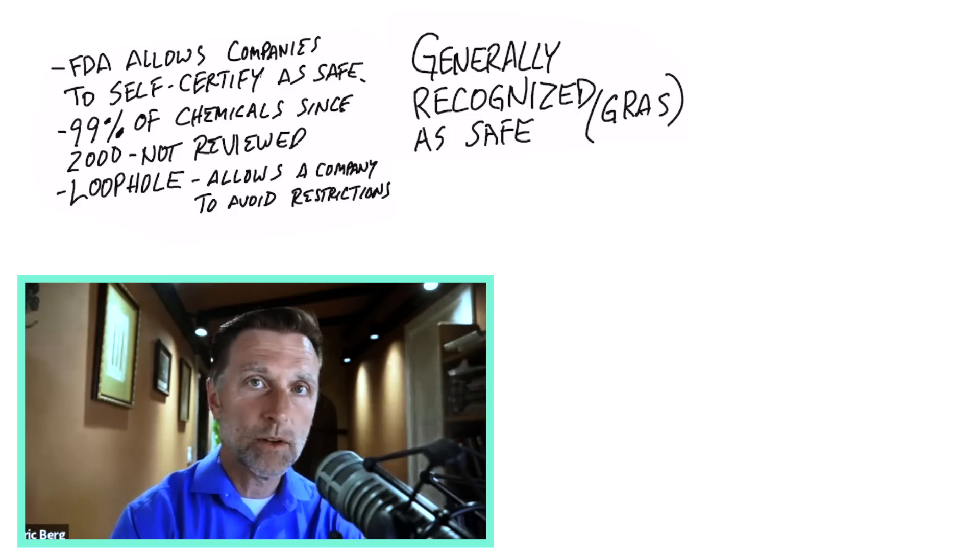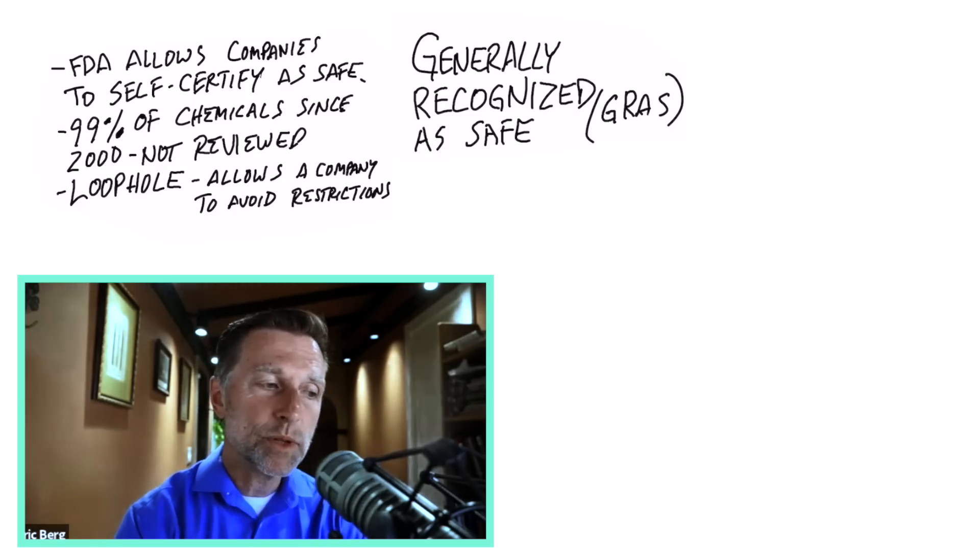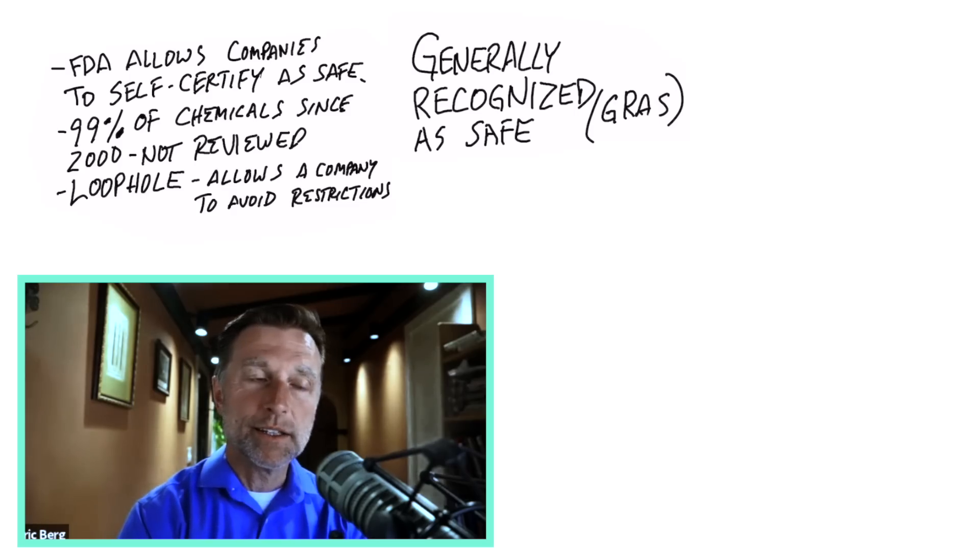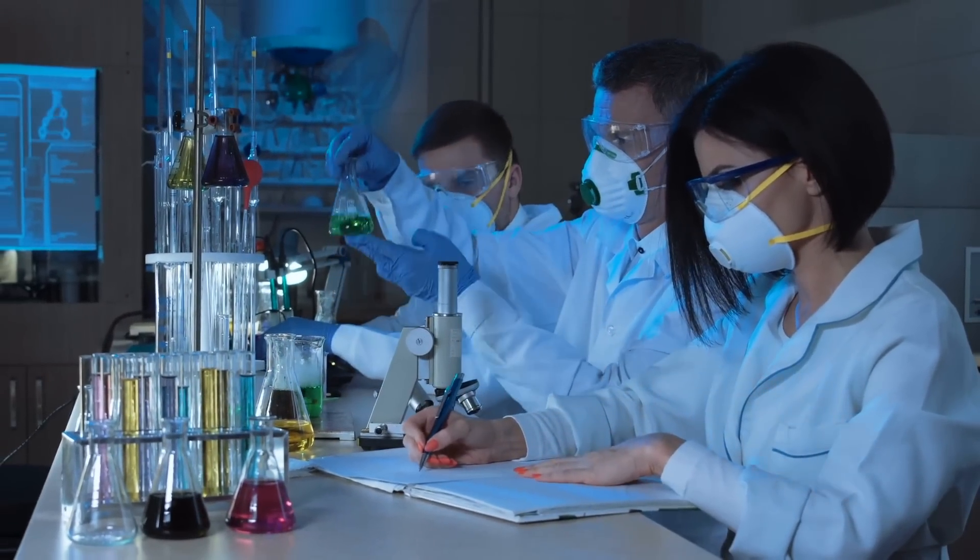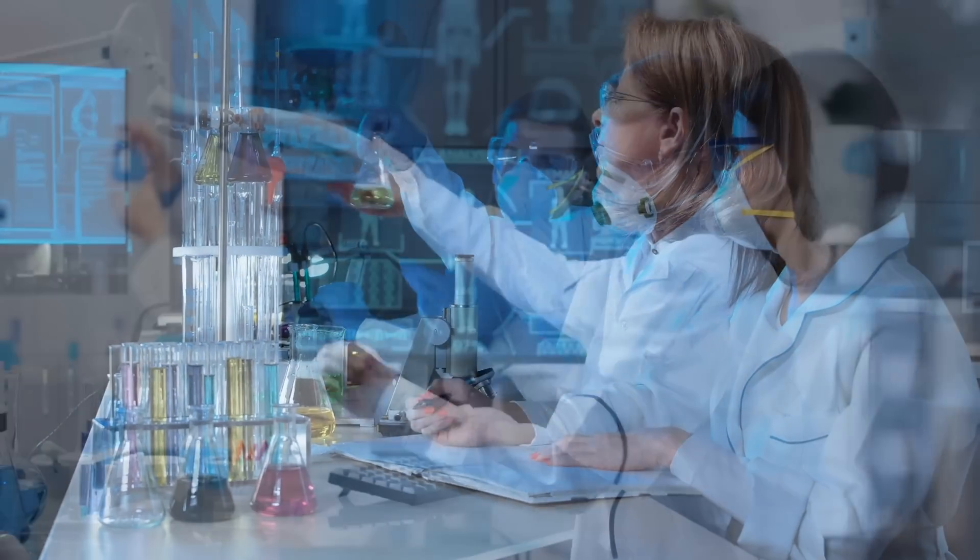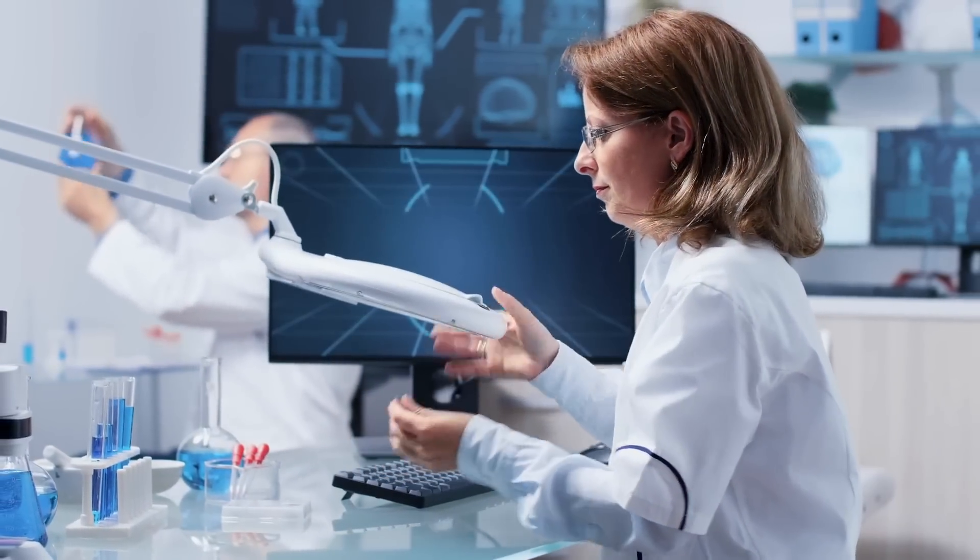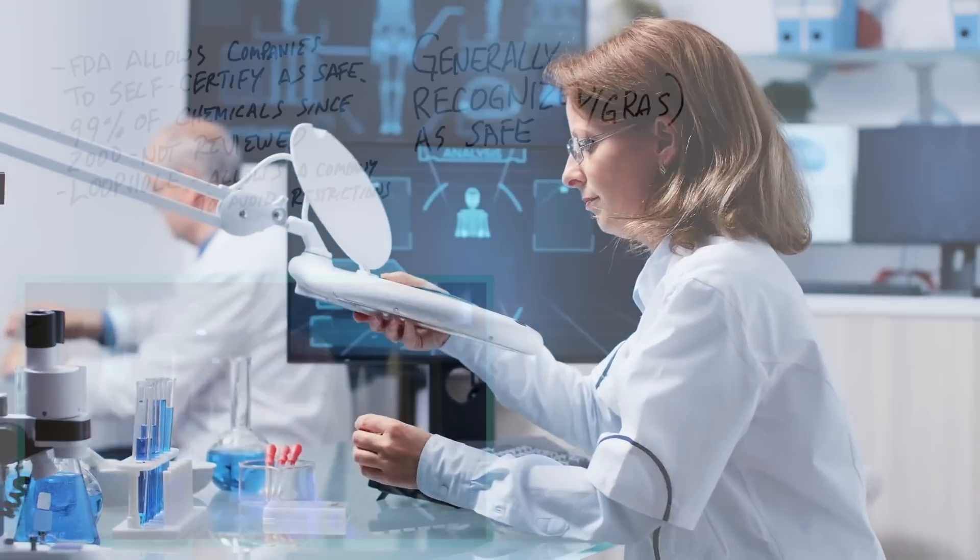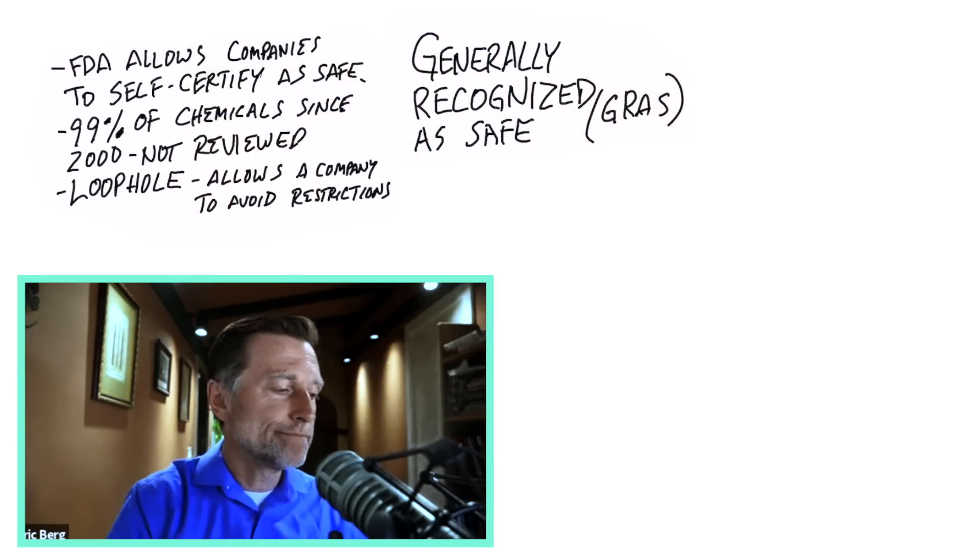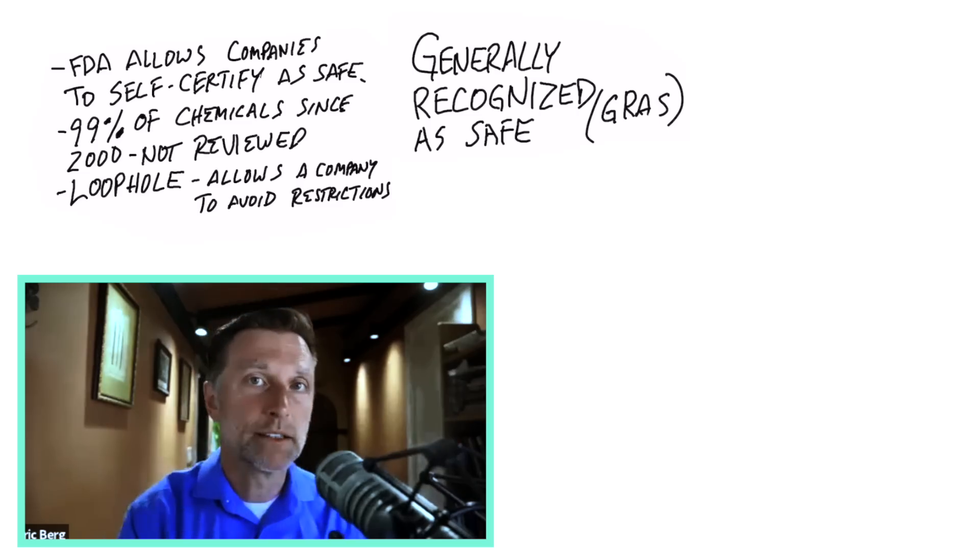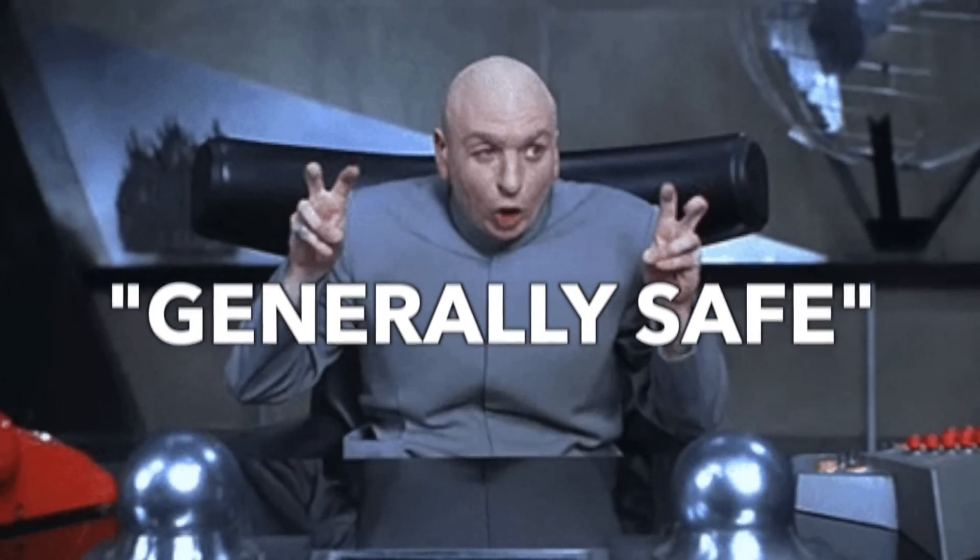It's a big, fat loophole that companies use to imply their chemicals are safe, despite other testing done by other facilities. Many chemicals allowed in the U.S. are not allowed in Europe. Today I'm going to talk about six of these poisons—I mean chemicals—that are generally considered as safe. I like how they use the word generally, so they don't have to be specific about it.